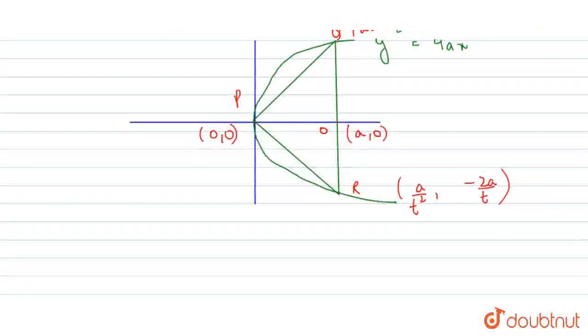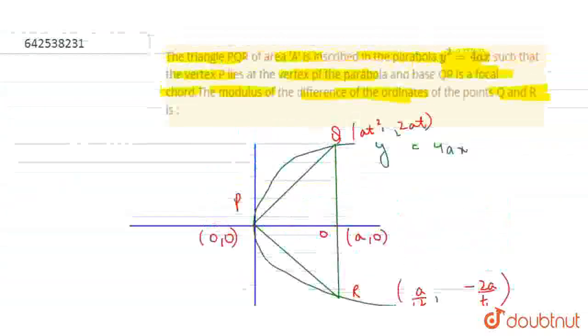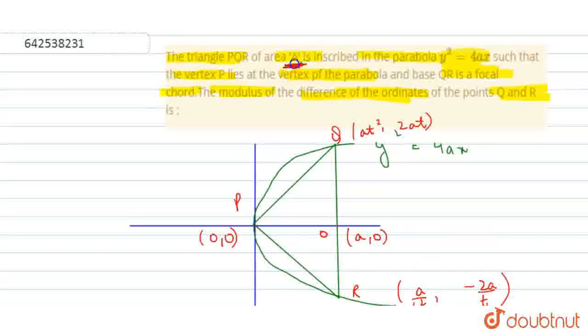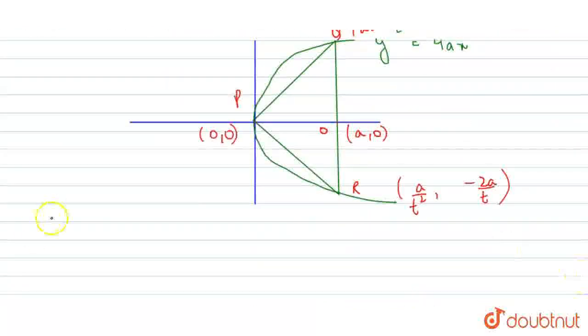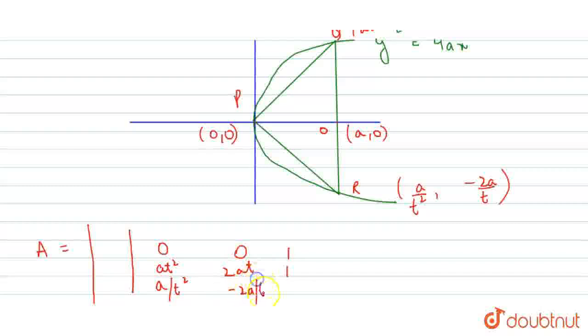We find the area. The question says area A is inscribed. Area equals 1/2 times modulus of determinant: 0, 0, 1; AT², 2AT, 1; A/T², -2A/T, 1.